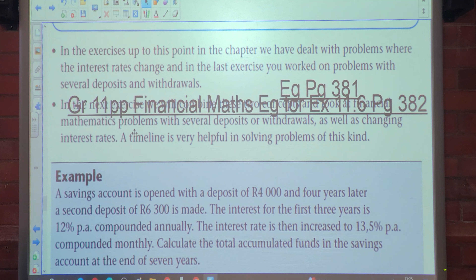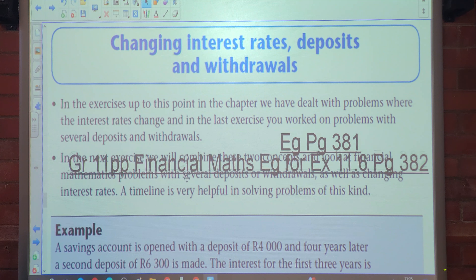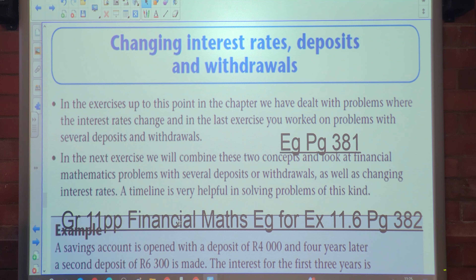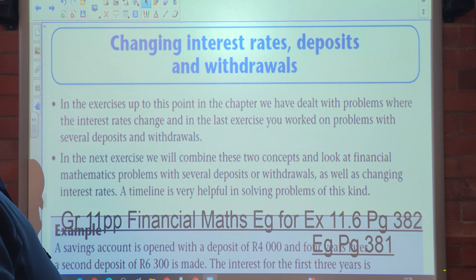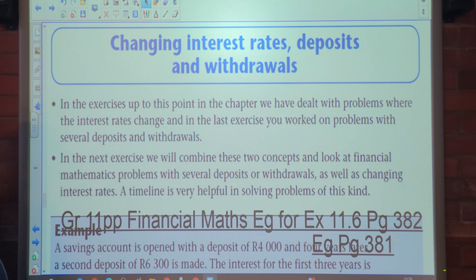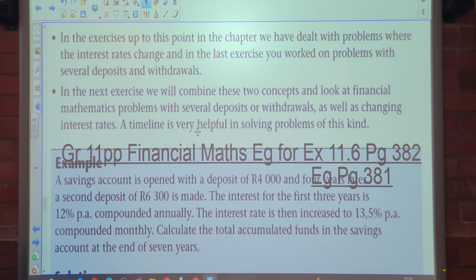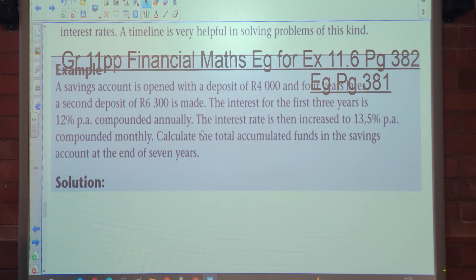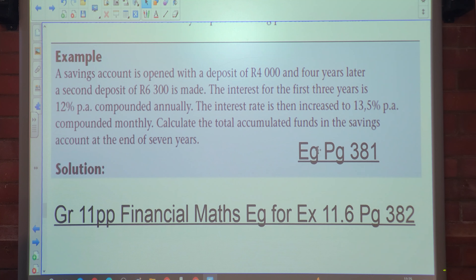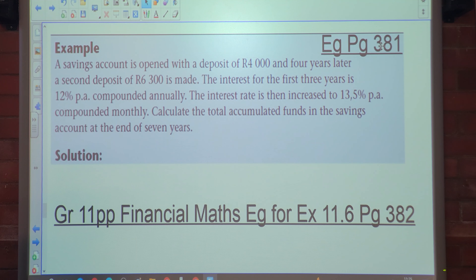So your heading for today: in the exercises up to this point in the chapter, we have dealt with problems where the interest rate changed, and in the last exercise you worked on problems with several deposits and withdrawals. In Exercise 11.6, we combine these two concepts and look at financial mathematics problems with several deposits or withdrawals as well as changing interest rates. A timeline is very helpful in solving these problems. Let's look at the first example, which is on page 381.